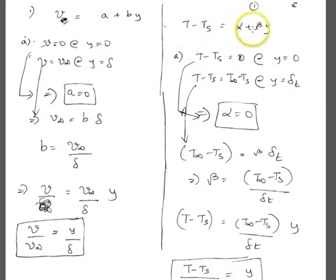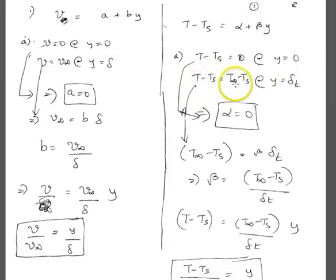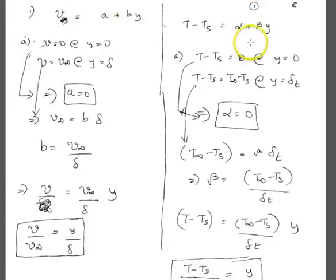Similarly, you assume a linear relationship for temperature. The constants are not going to be the same — you choose different constants. The two boundary conditions are: at the surface the temperature equals the surface temperature, and at the edge of the thermal boundary layer the temperature equals the free stream temperature T-infinity. Important: keep in mind that your thermal boundary layer thickness delta-T is different from your velocity boundary layer thickness delta. These are two different quantities.